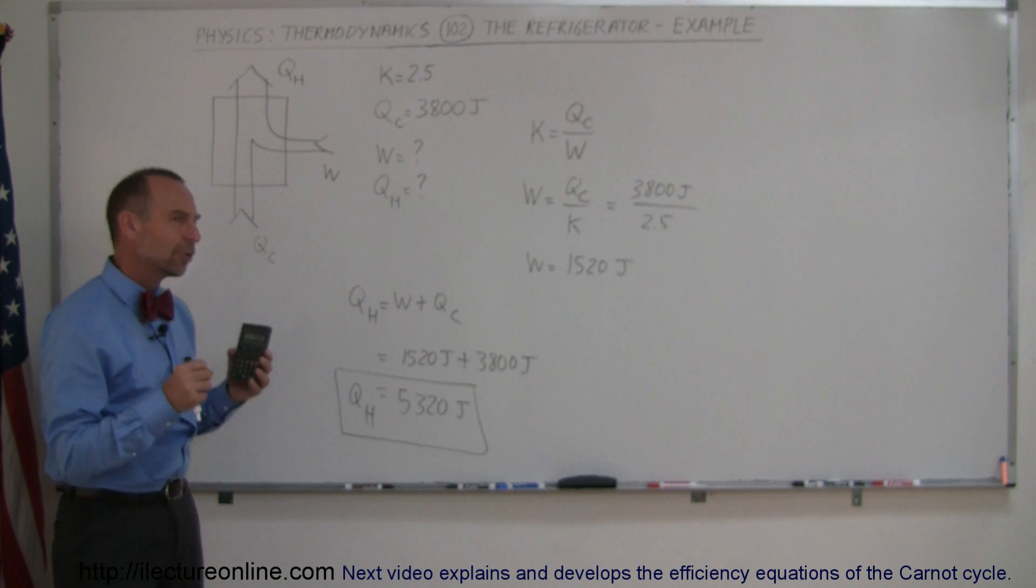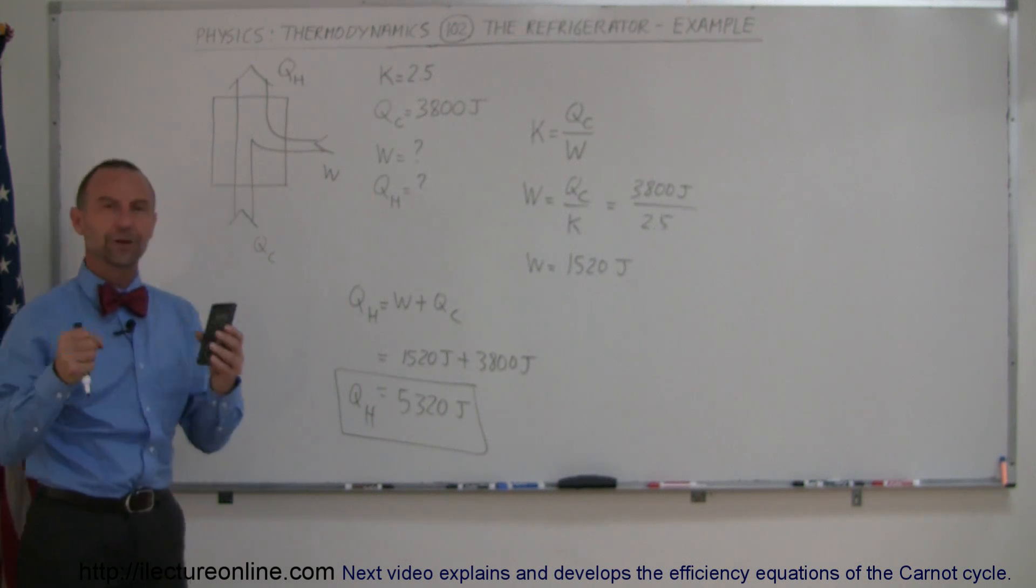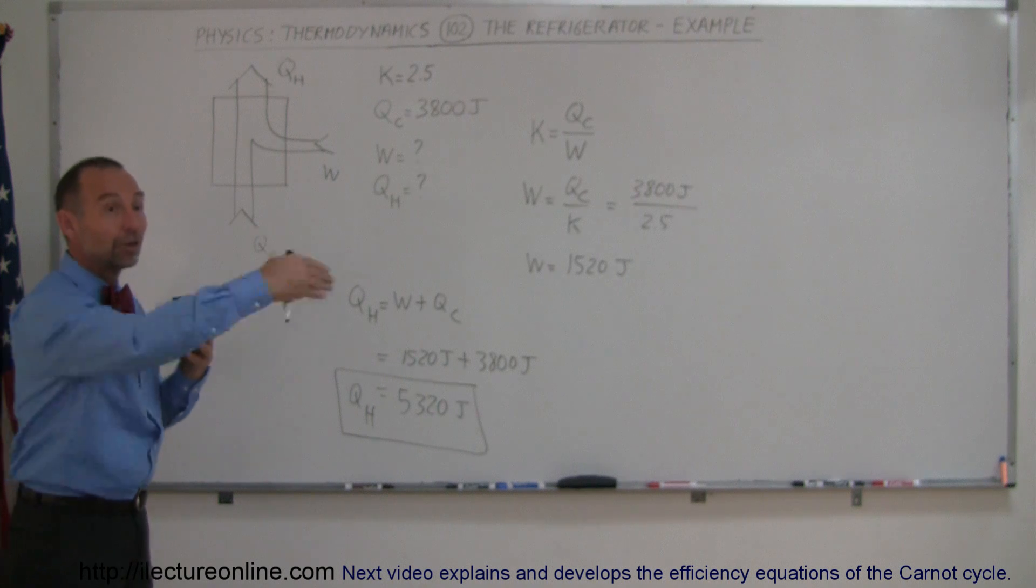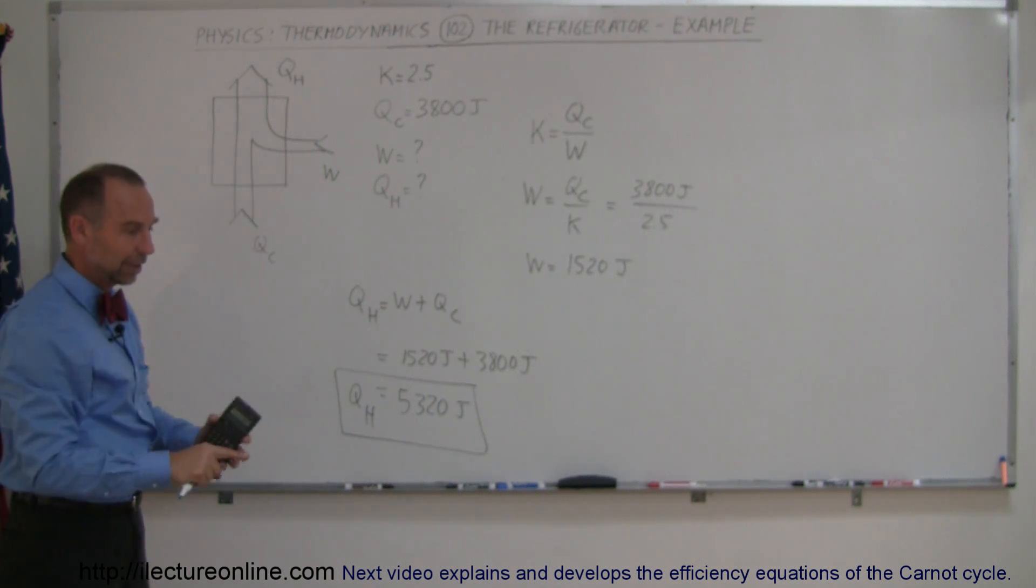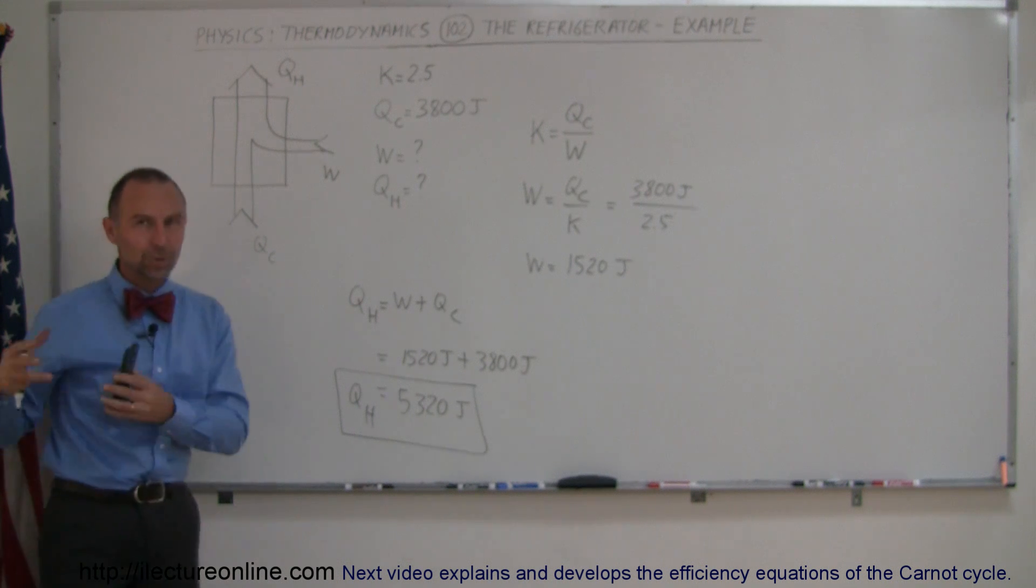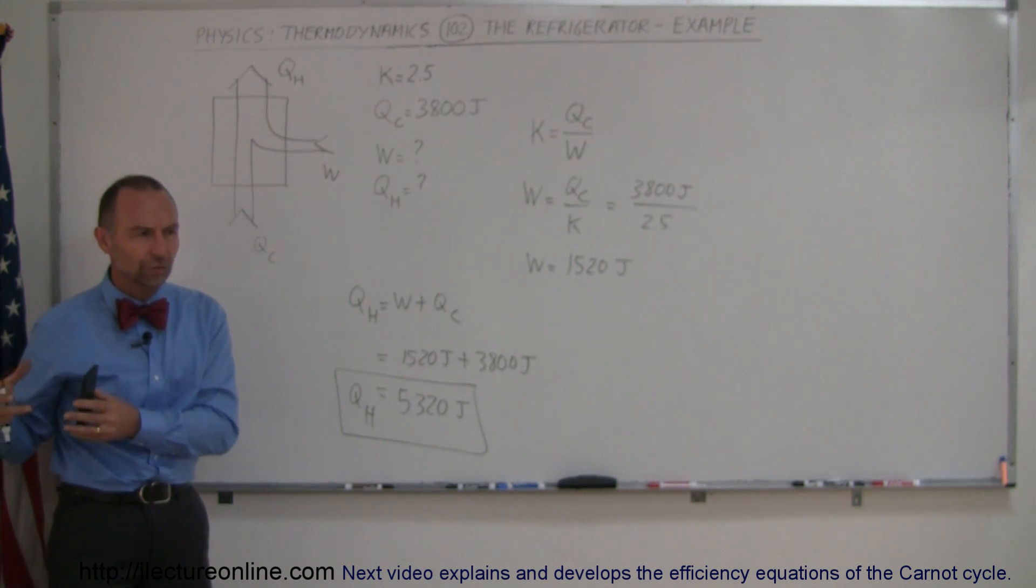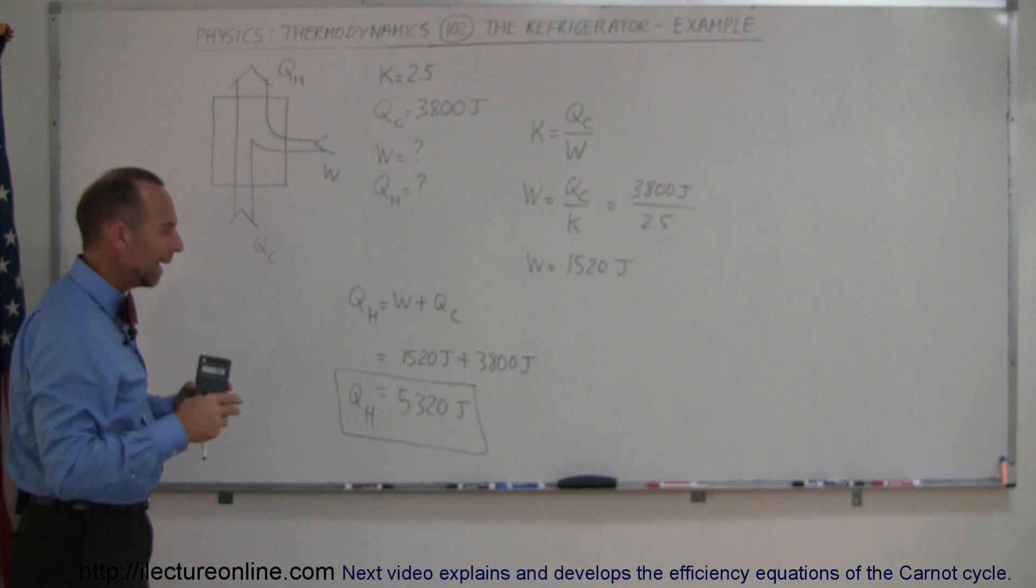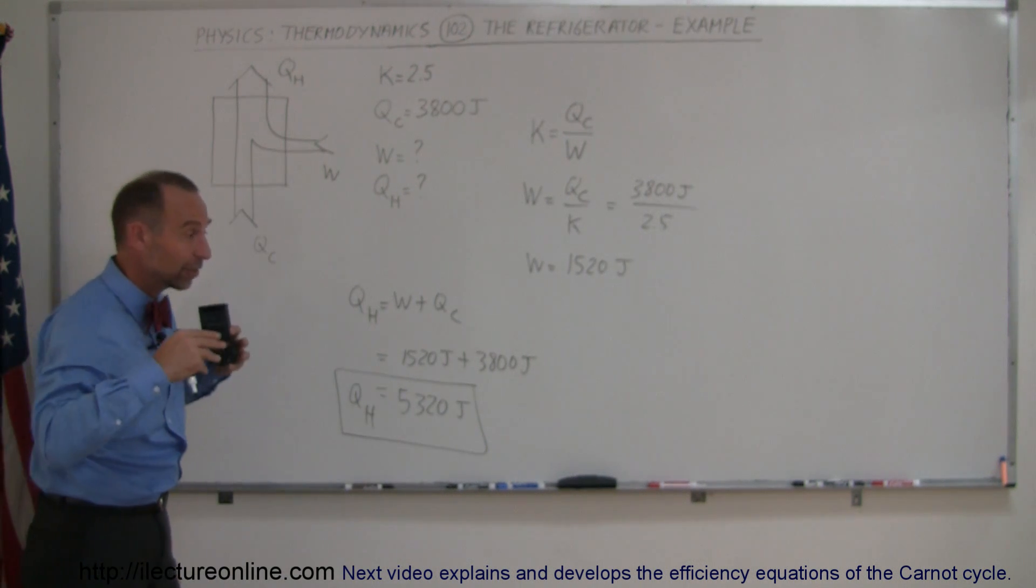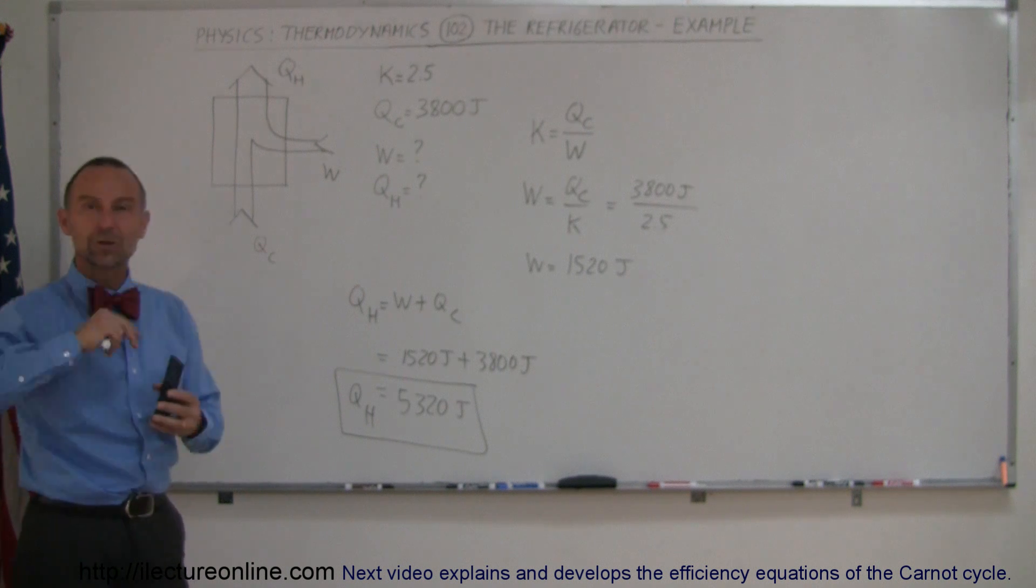Now, if you could take your refrigerator and roll it to the front door and have the part that expels heat pointed outwards, and seal off any openings left in the door, then you would take 3,800 joules of heat out of the house, and the 5,320 joules would be expelled outside. Then you could cool your house.